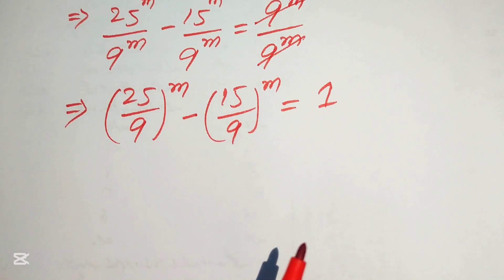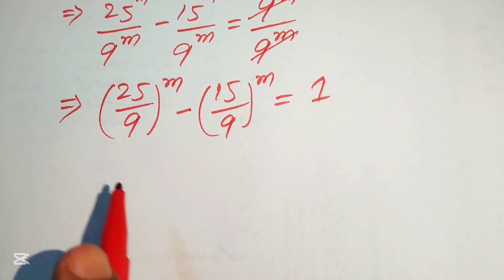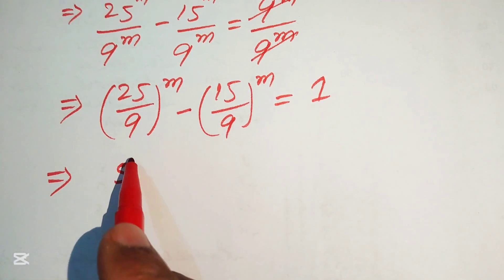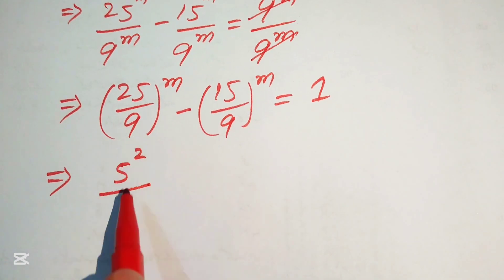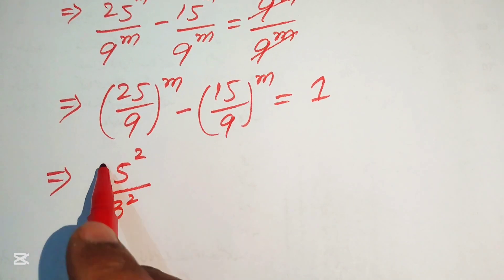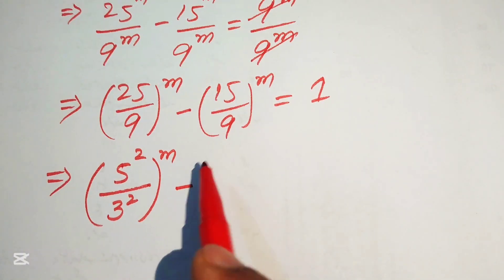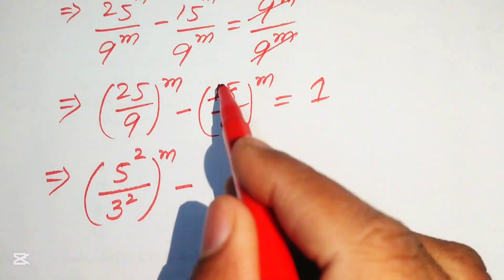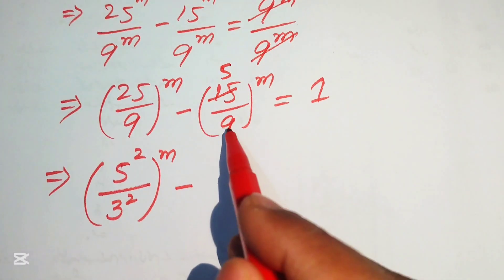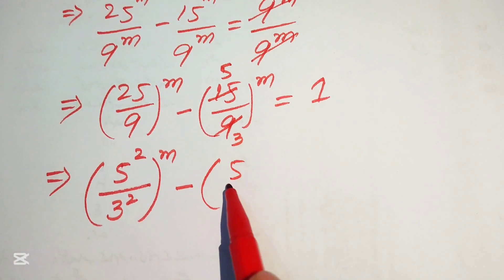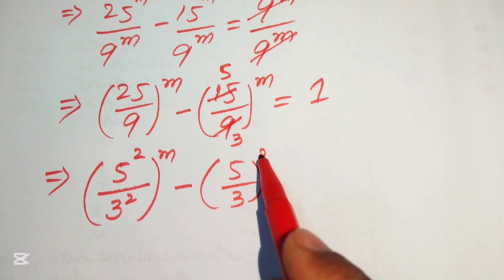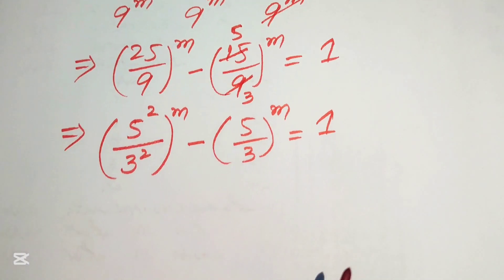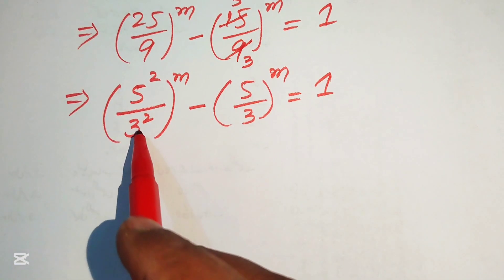We rewrite this exponential equation using the fact that 25 equals 5 squared and 9 equals 3 squared. For the second term, we cancel using the 3 times table: 3 fives are 15 and 3 threes are 9, giving us (5/3)^m, so we obtain (5/3)^m equals 1.